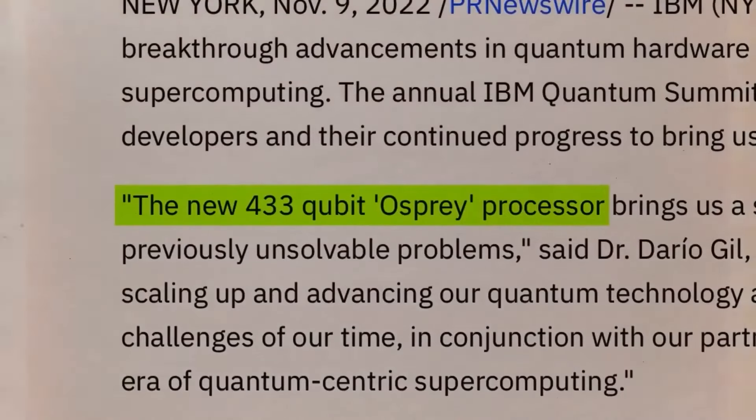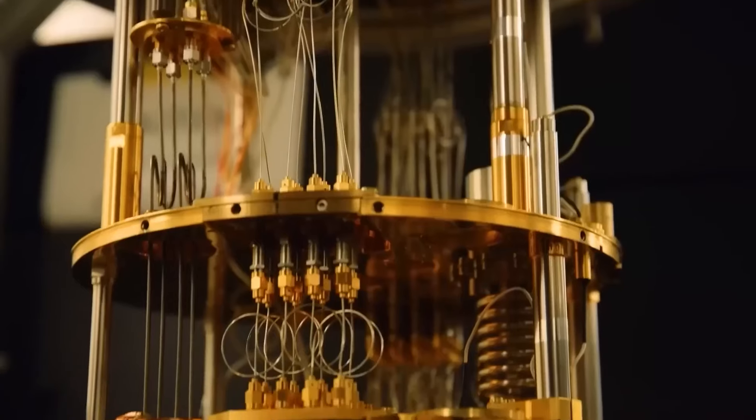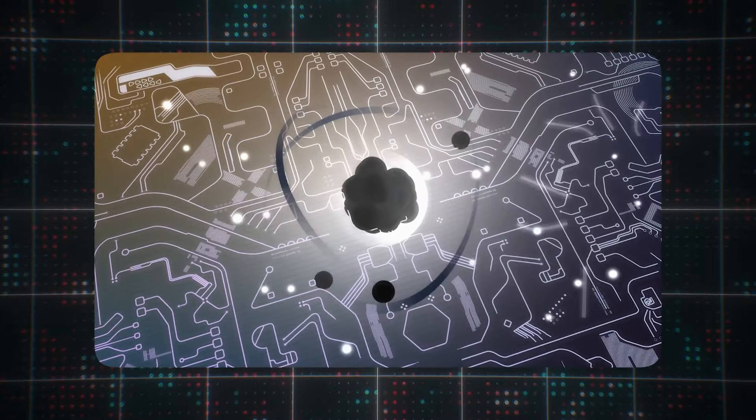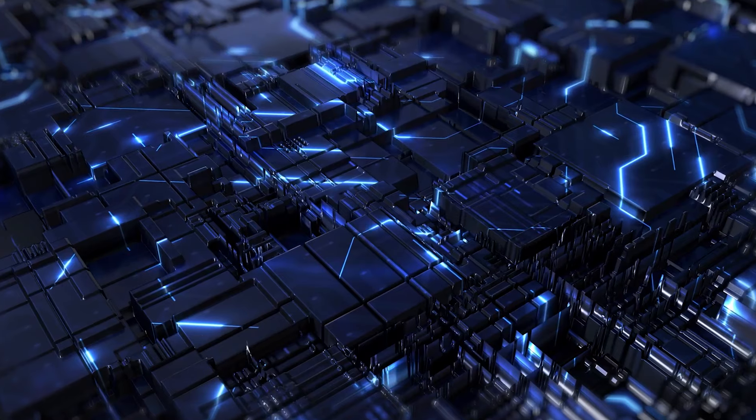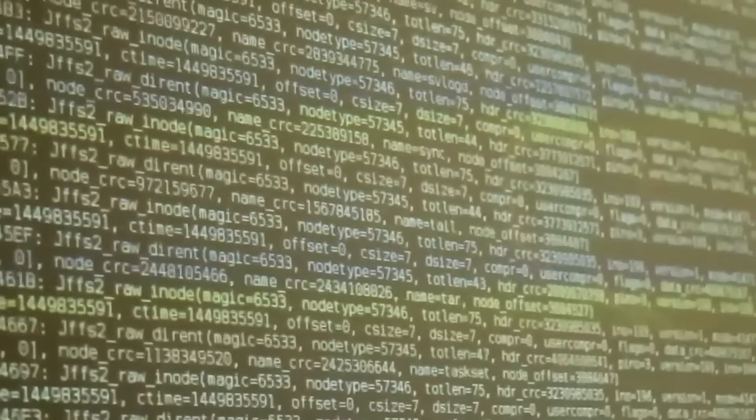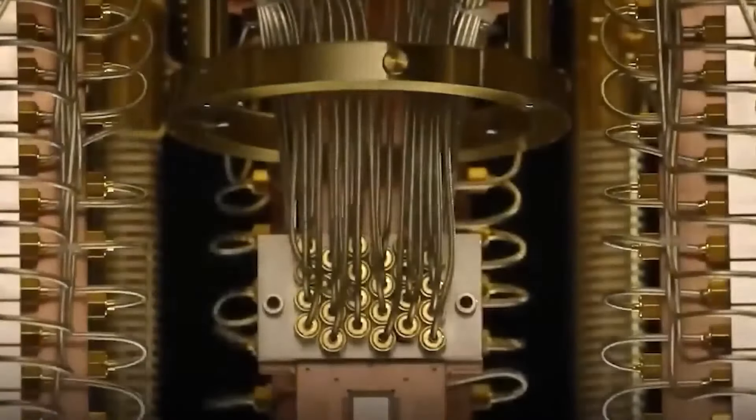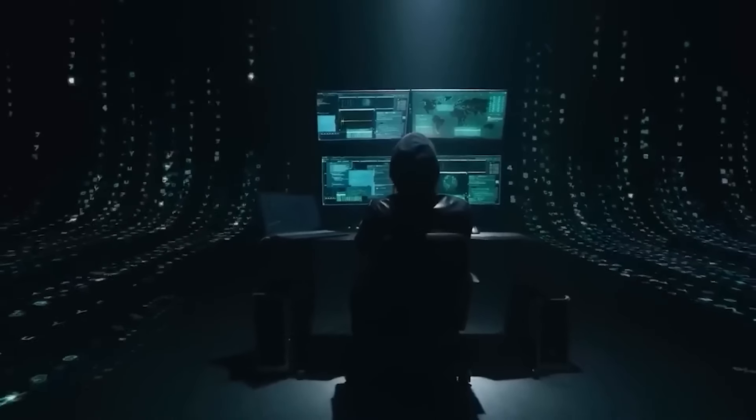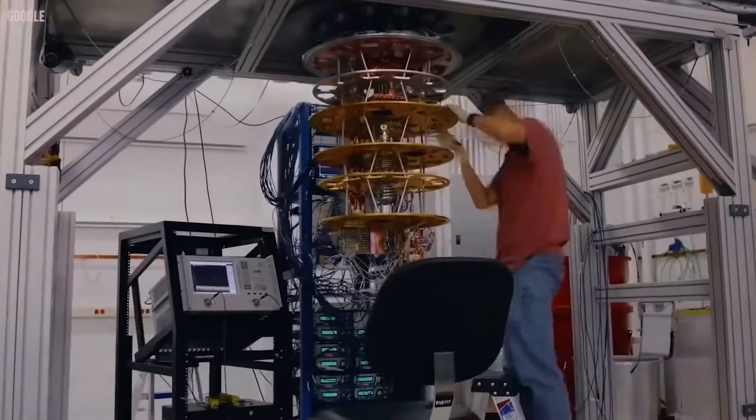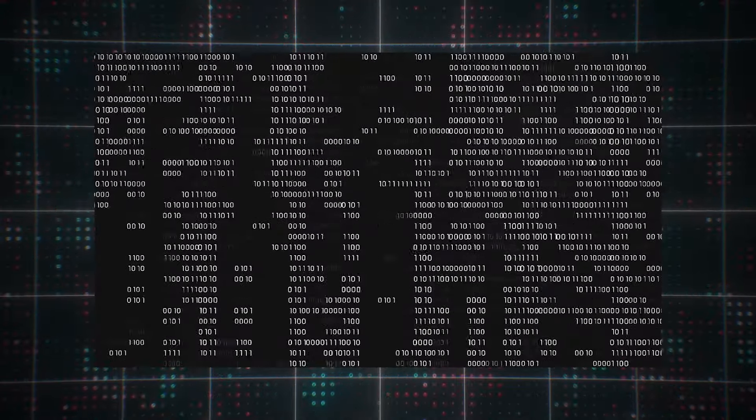But how is all this connected to quantum computers? Quantum computing initiatives are probably already underway in defense and other government research due to the technology's tremendous power and groundbreaking possibilities. Digital technology is based on semiconductors, which store information as a string of 1s and 0s. In contrast, qubits are the fundamental building blocks of quantum computers. Because it makes use of the seemingly paradoxical concept of superposition in quantum physics, a qubit can store both the 1 and 0 values concurrently.